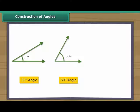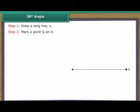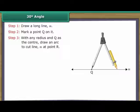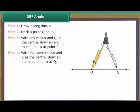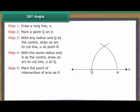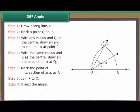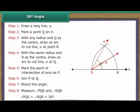Construction of special angles: 30 degree, 60 degree, and 120 degree. Construction of 30 degree angle: Draw a long line M and mark a point Q on it. With any radius and Q as the centre, draw an arc to cut line M at point R. With the same radius and R as the centre, draw an arc to cut the first arc. Mark the point of intersection as P. Join P to Q. Bisect the angle. Angle PQS equals angle SQR equals 30 degrees.